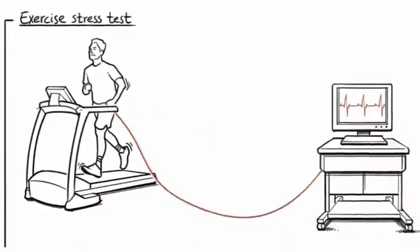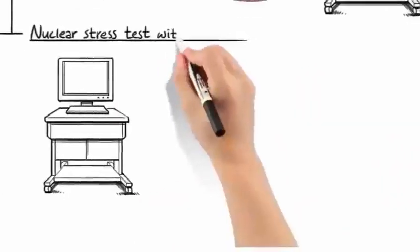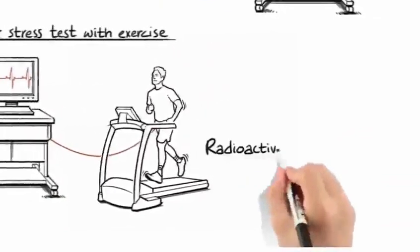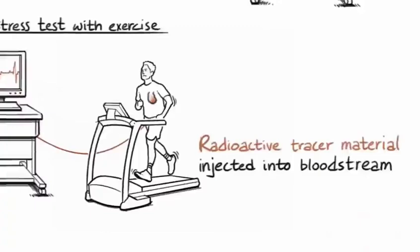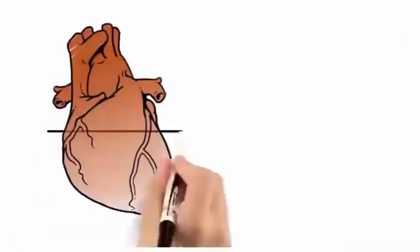In a nuclear stress test with exercise, a small dose of radioactive tracer material is injected into your bloodstream while you exercise. This allows a specialized camera to take detailed images of your heart.